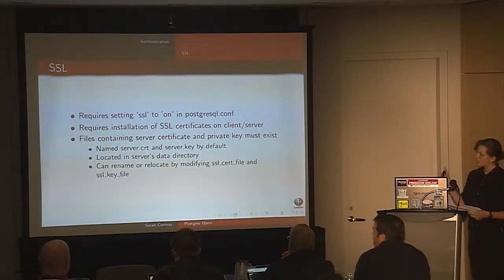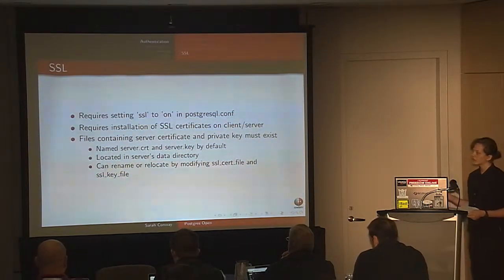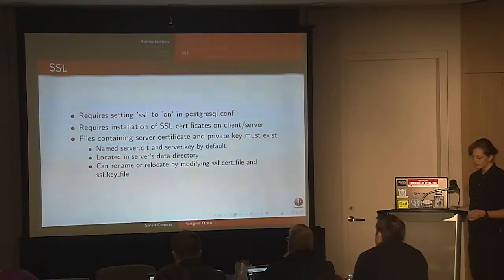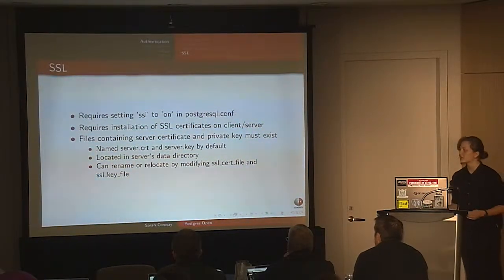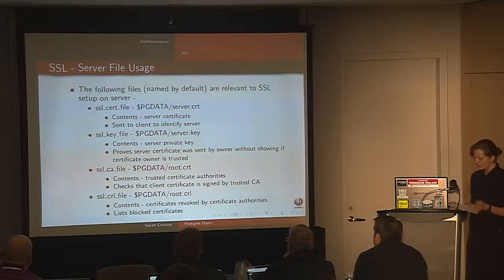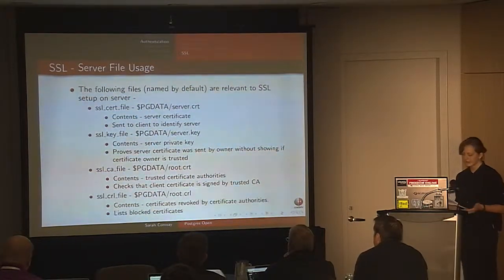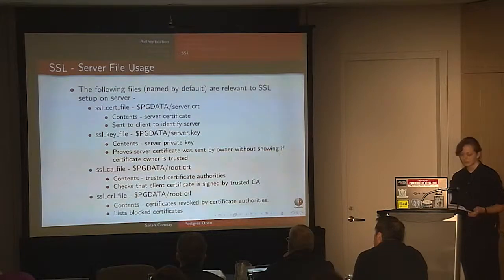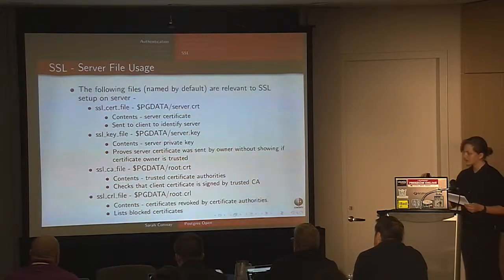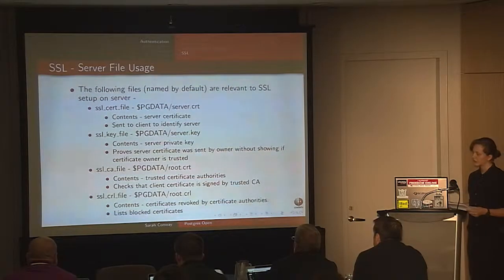If you want to set up SSL, you always have to set SSL to on in postgresql.conf — by default it's off. The server certificate and private key must exist, named server.crt and server.key, located in pgdata. You can rename or relocate them by modifying ssl_cert_file and ssl_key_file. There are four main files relevant to SSL: ssl_key_file (private key), ssl_cert_file (server certificate), the CA file (trusted certificate authority that signed your certificate), and the CRL file (lists certificates revoked by certificate authorities).